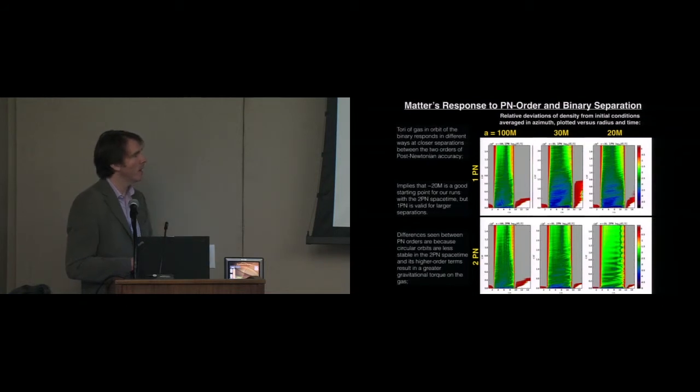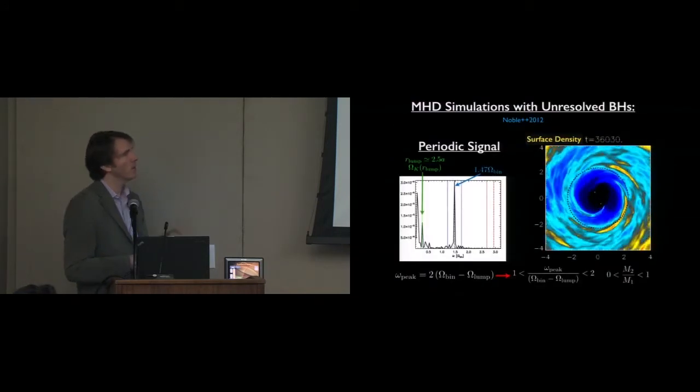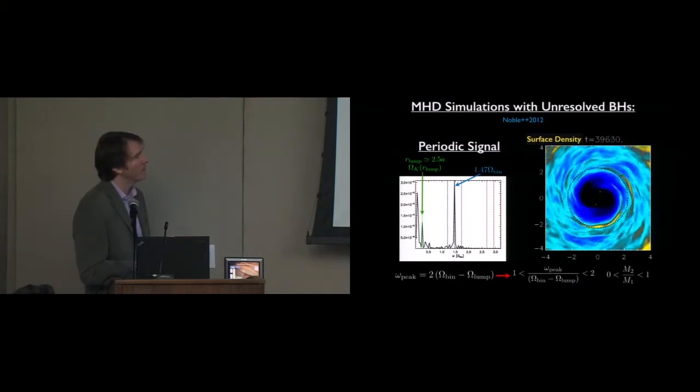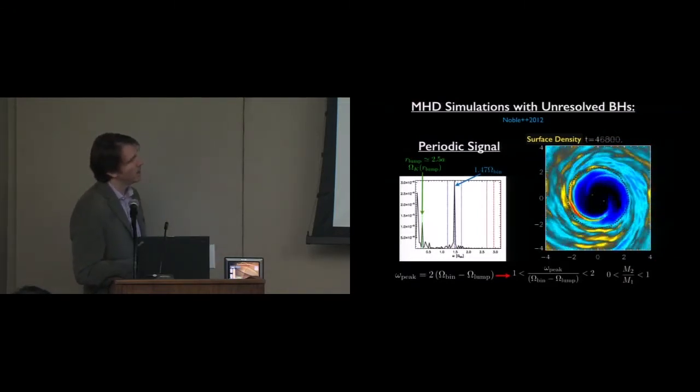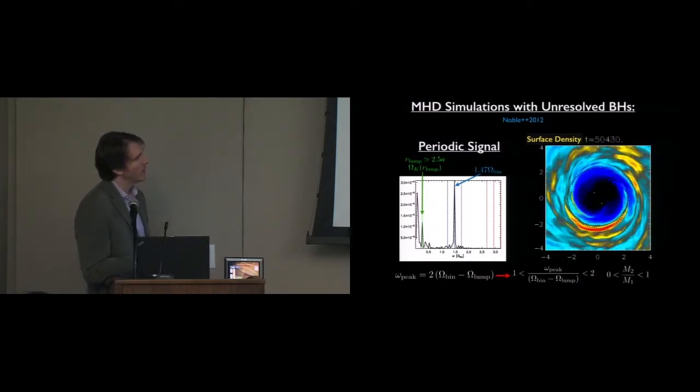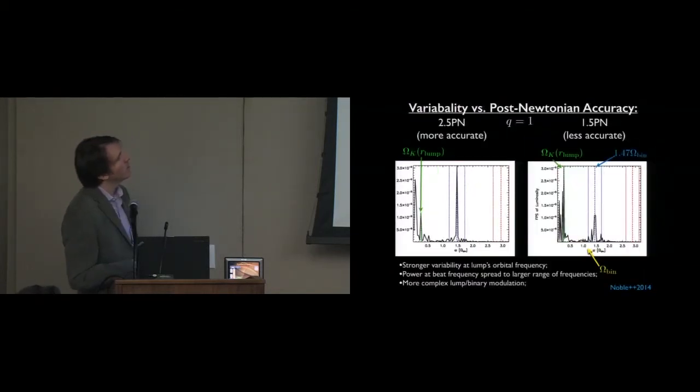We've performed calculations at different separations with different PN orders, and we found that 20M is a good separation. We've also characterized an electromagnetic source, an electromagnetic signature. This is a periodic signal from the binary interacting with the gas. This is a characteristic frequency. On Blue Waters, we've looked at different orders of accuracy. We've turned down the accuracy of our gravity and we've found that this frequency diminishes. This suggests that we need 2PN in this regime. But it also shows that gravity is actually an important influence in getting out the accurate electromagnetic signatures.